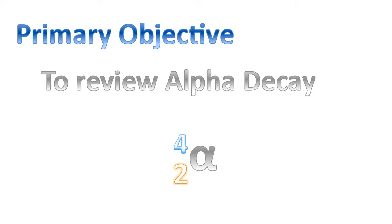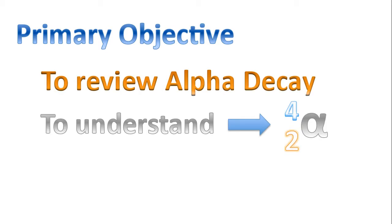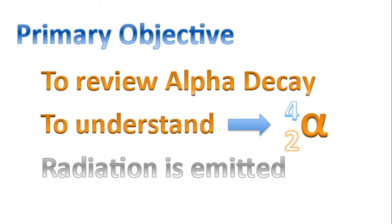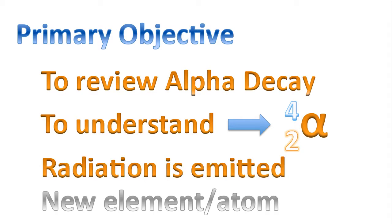Good morning! Today our primary objective with this video is to review alpha decay. Specifically, we'll try to understand what that symbol means. We'll come to understand that during an alpha decay, radiation is emitted, and a new element or atom is formed.